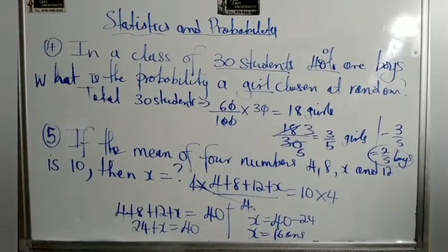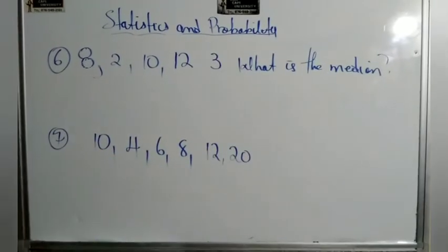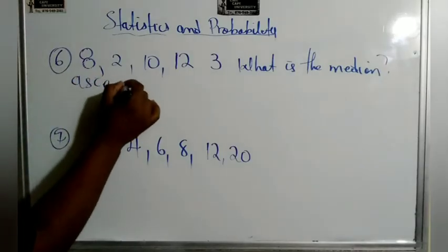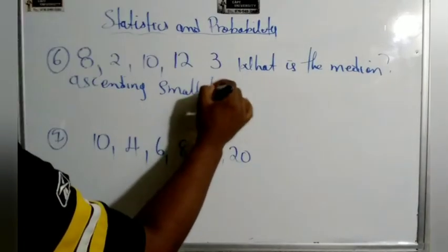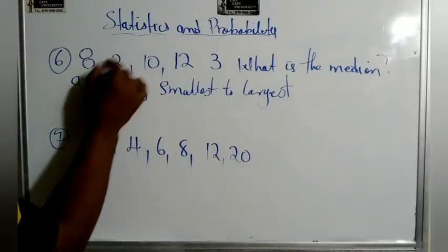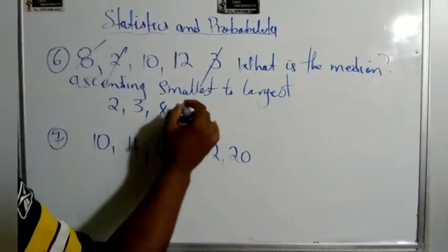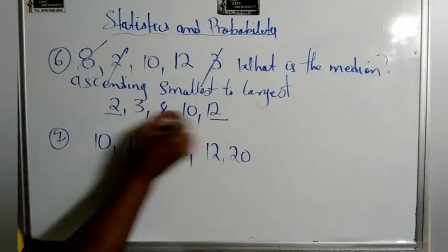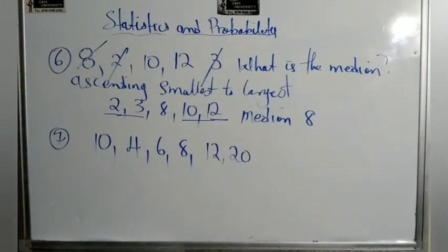Number six asks for the median. The median is the middle number after arranging in ascending order — from smallest to largest. Most students prefer ascending order. So we arrange the numbers: 2, 3... and then 12. Going from one end, the middle value lands on 8. So the median is 8.